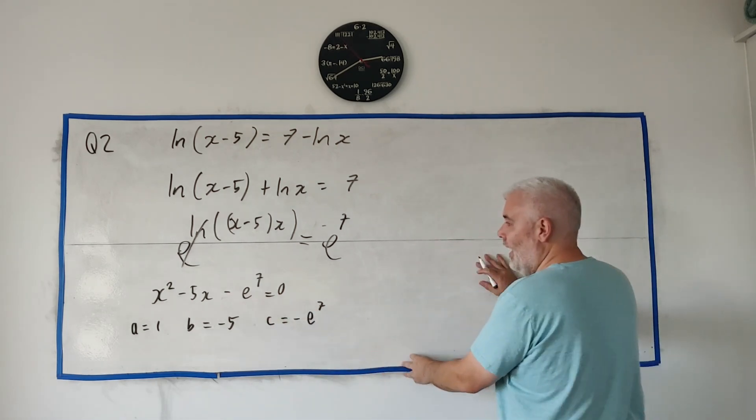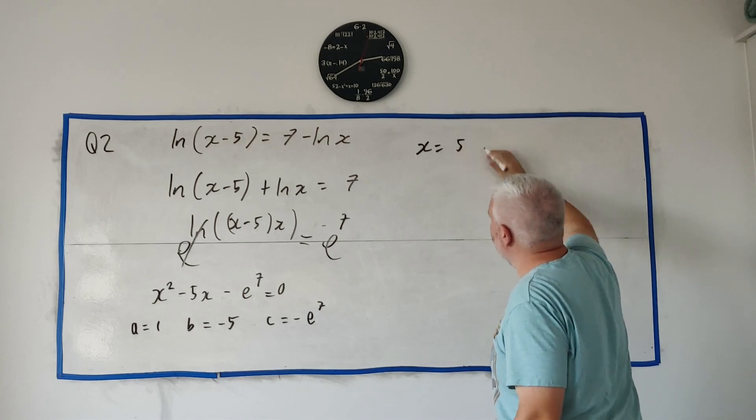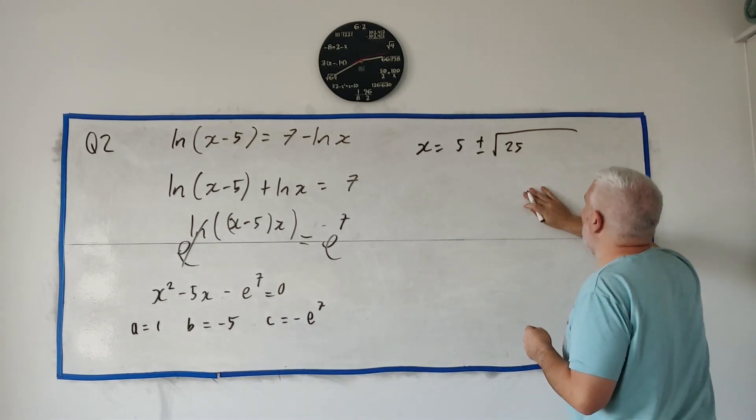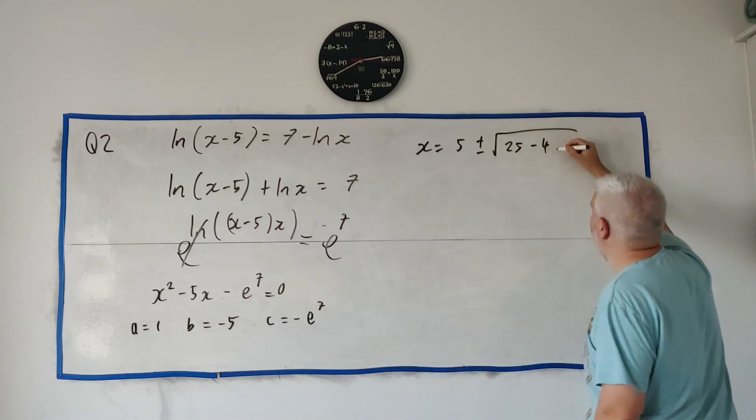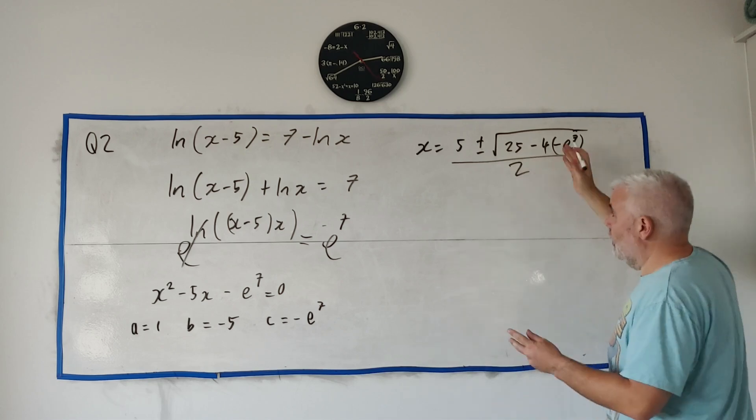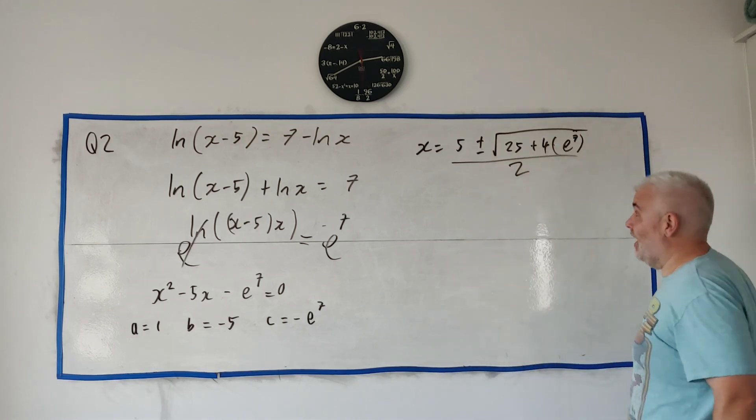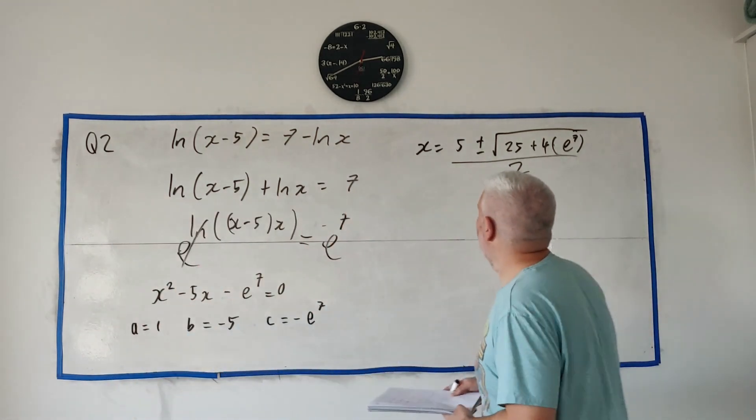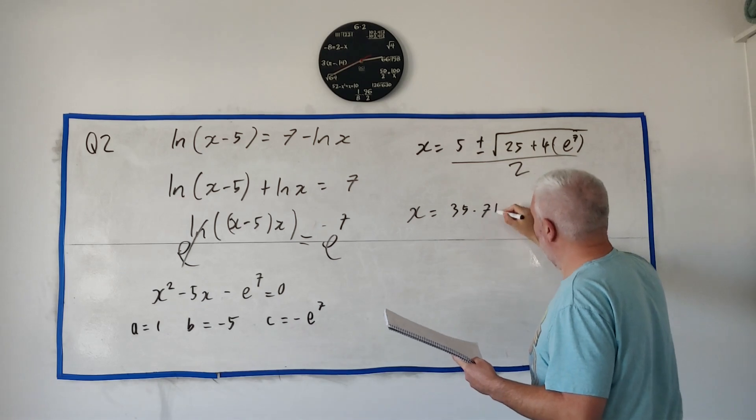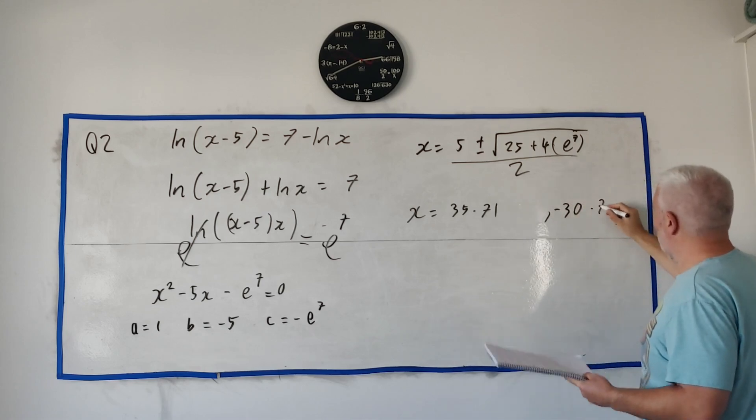Just go ahead and solve this using the formula. X is equal to minus B, which is minus minus is a plus, plus or minus the square root of B squared. Minus 5 squared is 25. Minus 4 times A, which is 1, times C, which is another minus E to the power of 7. All over 2. You can clean this up a bit. Those two minuses make a plus. Other than that, I guess I just put this in the calculator at this point, which I've done here. Put it in with a plus, then put it in with a minus. Get two answers. Two answers I get are 35.71, rounded off two decimal places. And the other answer I get is minus 30.71.